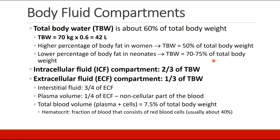The total body water is then subdivided into intracellular and extracellular fluid compartments. About two-thirds of your total body water is contained within your cells, whereas one-third is outside of the cells. This extracellular fluid can be further subdivided into interstitial fluid, which is fluid outside of the vasculature, and plasma volume, which is the volume inside the vasculature. Three-quarters of your extracellular fluid compartment is interstitial, and one-quarter is in the plasma.